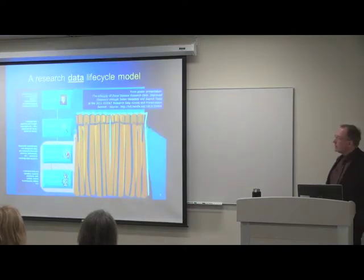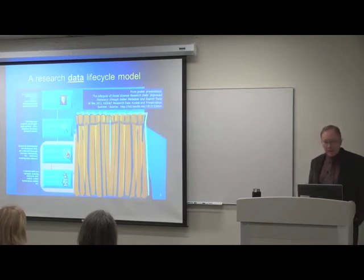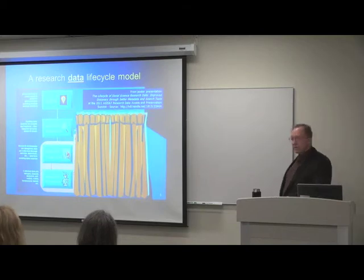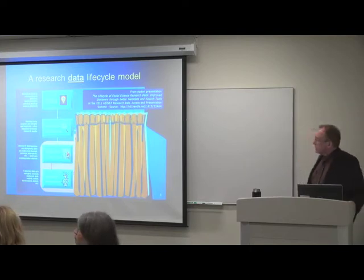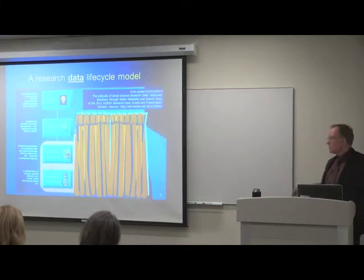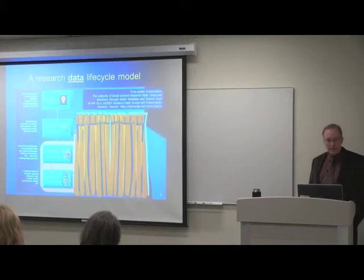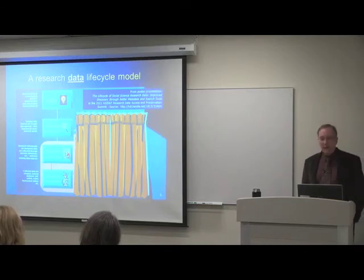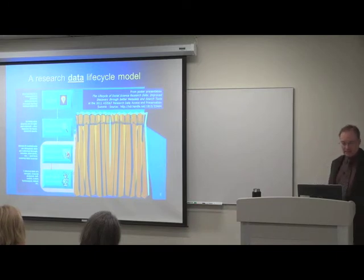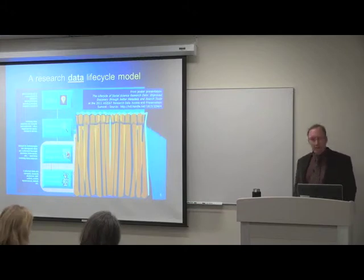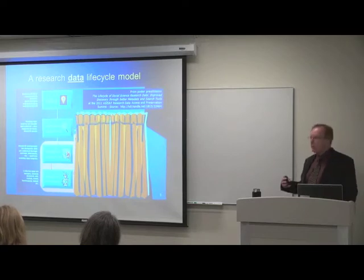Here is a model of the research data lifecycle. There are many models — some very complex; this one is more simplified. Two colleagues at Cornell and I put this together about three years ago. In the model, it all begins with the idea in the researcher's head, where they conceive and plan a study. Then they select methodologies to collect and analyze data, look for funding sources, and apply for funding if necessary. In the next stage, they look for existing data so they don't replicate a collection that has already occurred, and to find any data relevant to their study that they might reuse, repurpose, or merge with their own data.